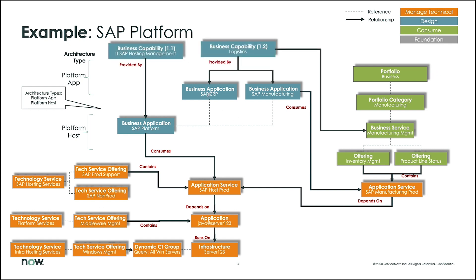Looking at capabilities, we have the SAP hosting management capabilities, which might lie in IT as a more technical capability providing technical services. Then we have the logistics business capability, which is run out of the business, with applications running on the SAP platform providing logistics capabilities. Those business capabilities tie back into the service, so you can measure the health of the application based on service delivery — the SLA, OLA, and commitments established at the offering level.